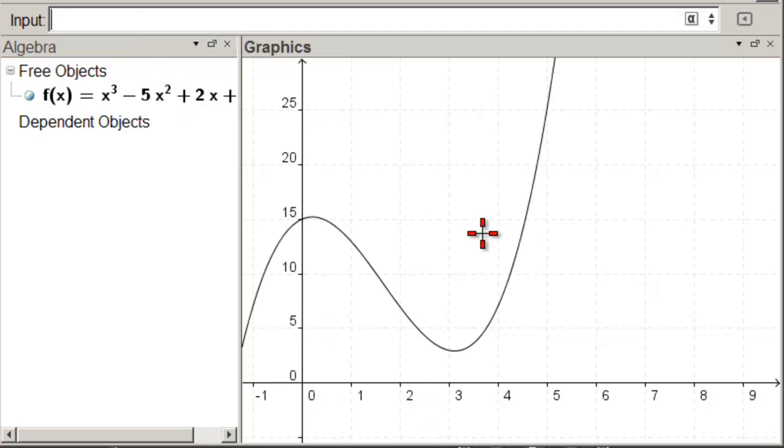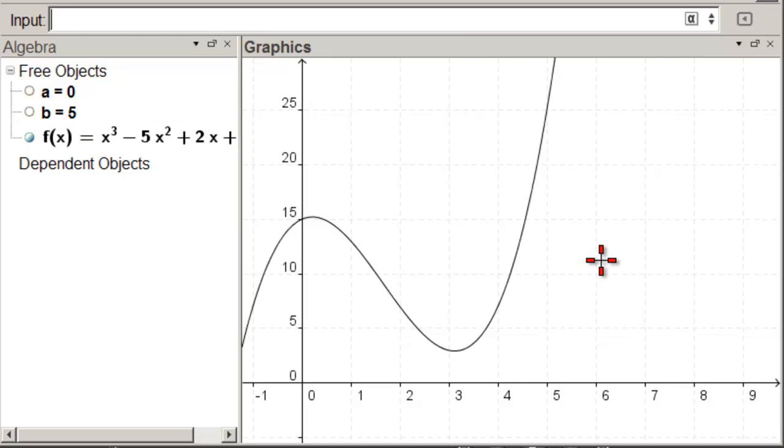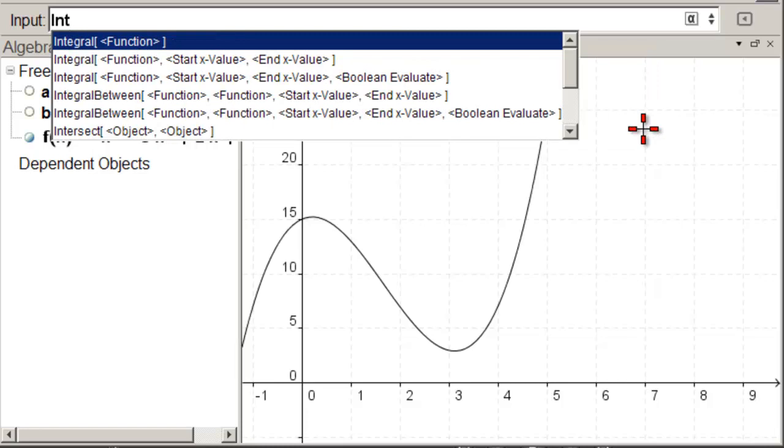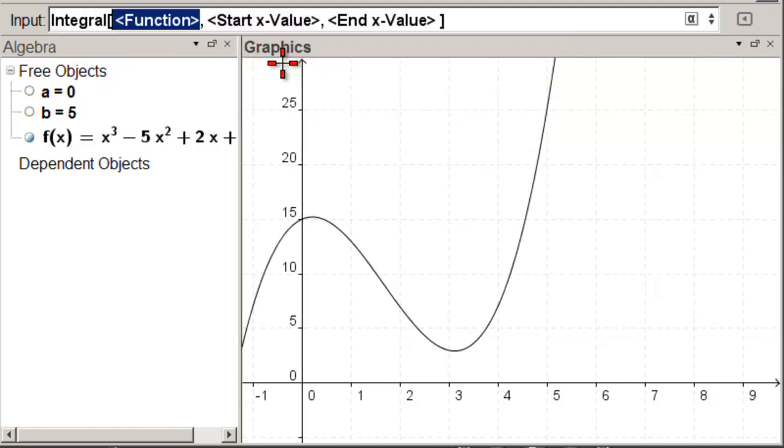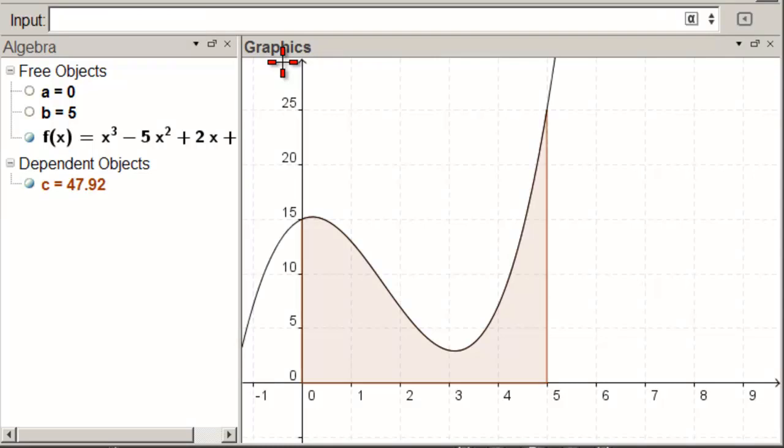So now we need to put in our left limit and our right limit, so we can integrate. So A equals 0, hit enter. B equals 5, hit enter. And now we're going to do the exact integral, which is integral. We start to type integral, there it is. We need this one that has a start value and an end value. So that one, and we put F for a function, and we come over to start value. It's the letter A, and the end value is the letter B.